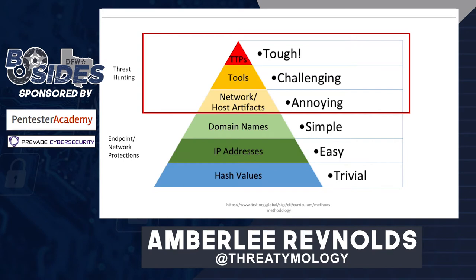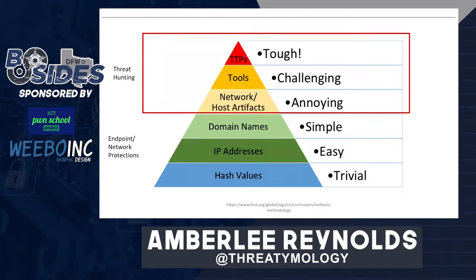Here's an artifact pyramid or IOC pyramid showing what threat hunters tend to focus on. The things on the bottom — domain names, IP addresses, and hash values — are still important and will be used, but they're better suited for endpoint and network protection appliances. Threat hunters focus on things that humans are better at finding: TTPs (tactics, techniques, and procedures), tools used by threat actors, and network and host artifacts that standard security monitoring may or may not catch. AI and machine learning are working toward finding these, but for now it's still easier for humans in conjunction with their machine counterparts.